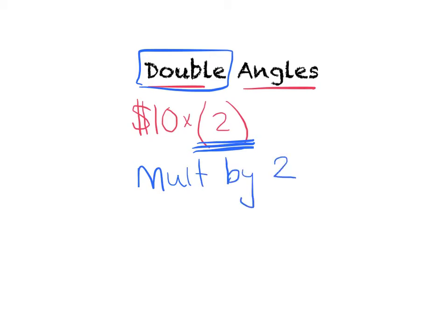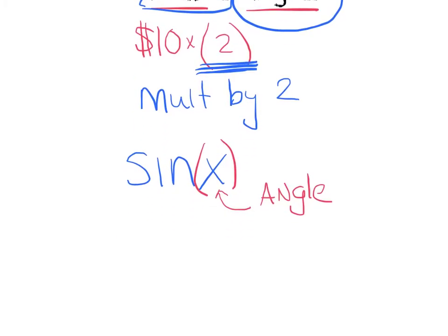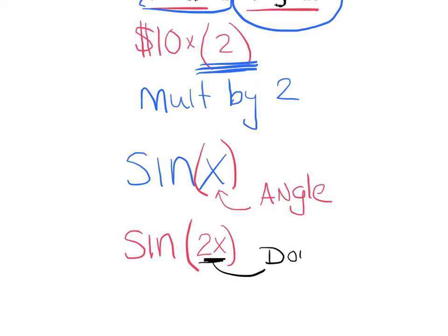Now, you're not going to just multiply anything by two — it's called a double angle. The key is that we want to double our angle. So when I say the sine of x, we should know from our trig experience that x represents the angle. So if I want to double that angle, I would rewrite it as the sine of 2x — I'm taking that angle x and doubling it, multiplying it by two. This is what we recognize as a double angle.